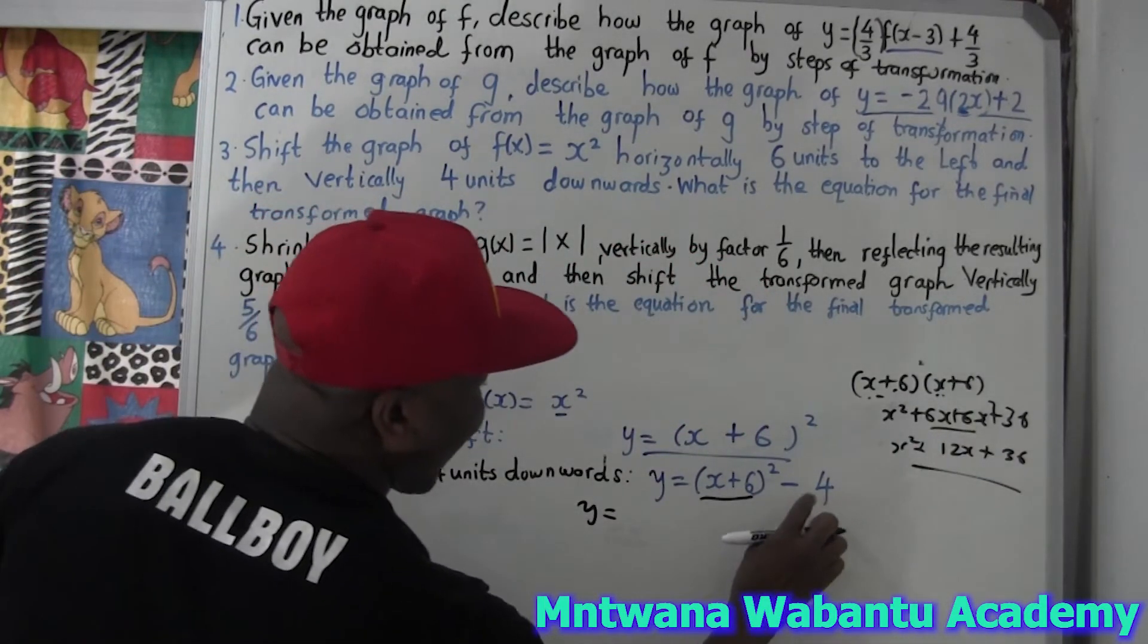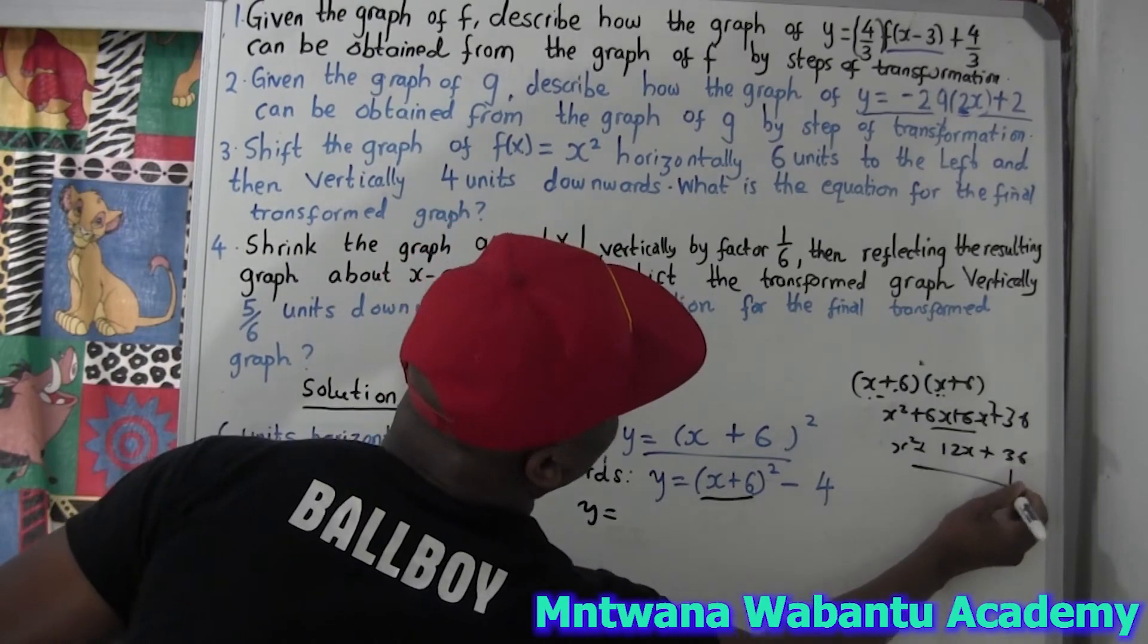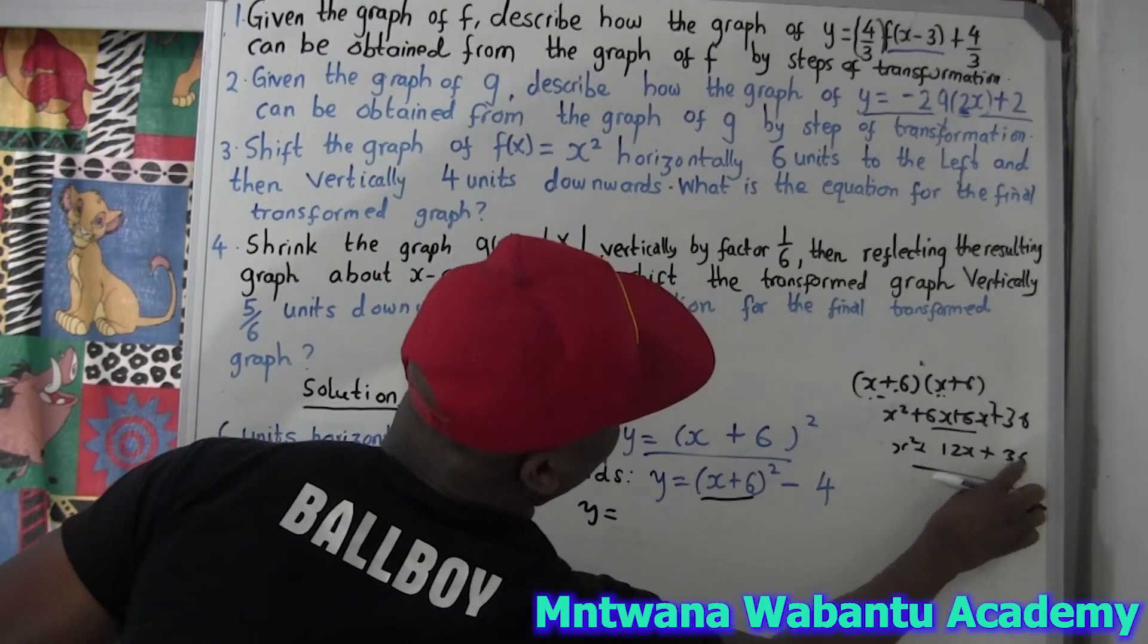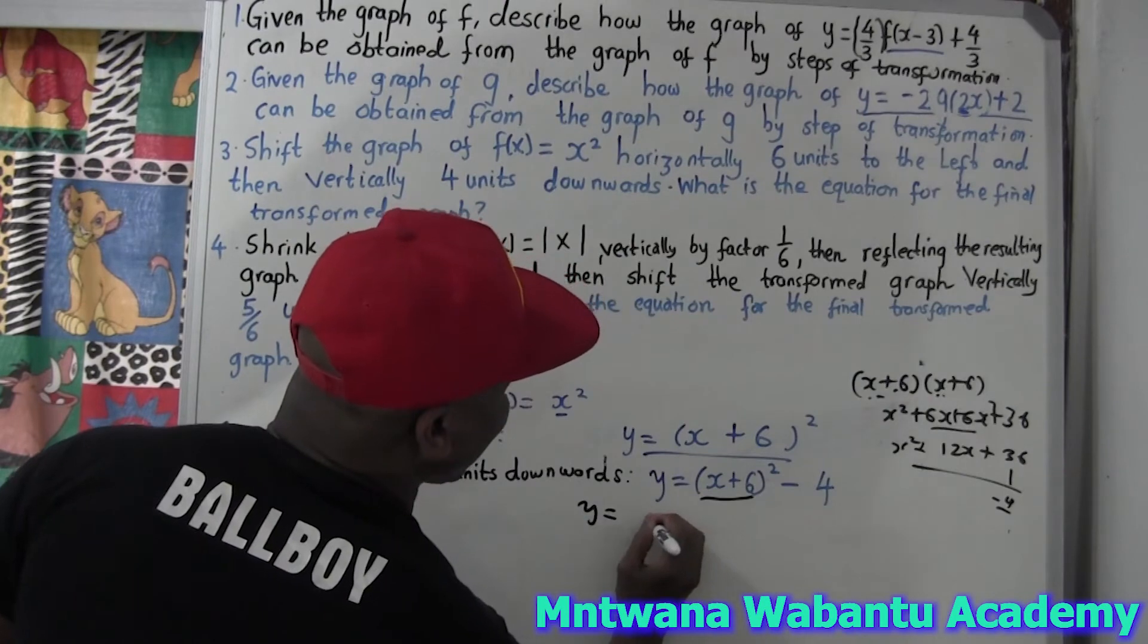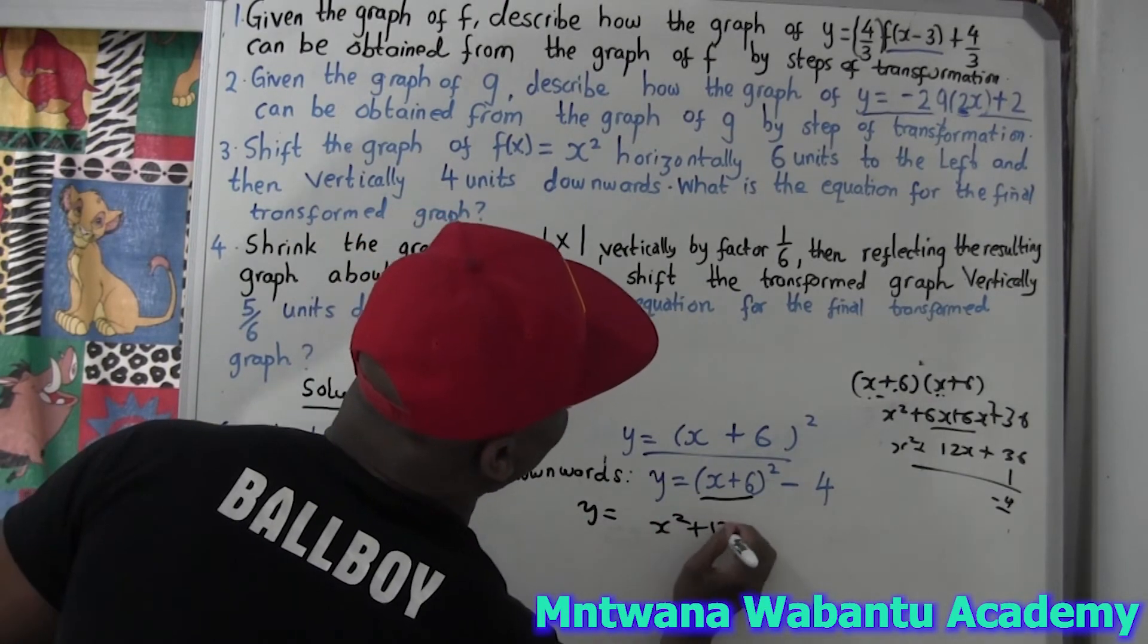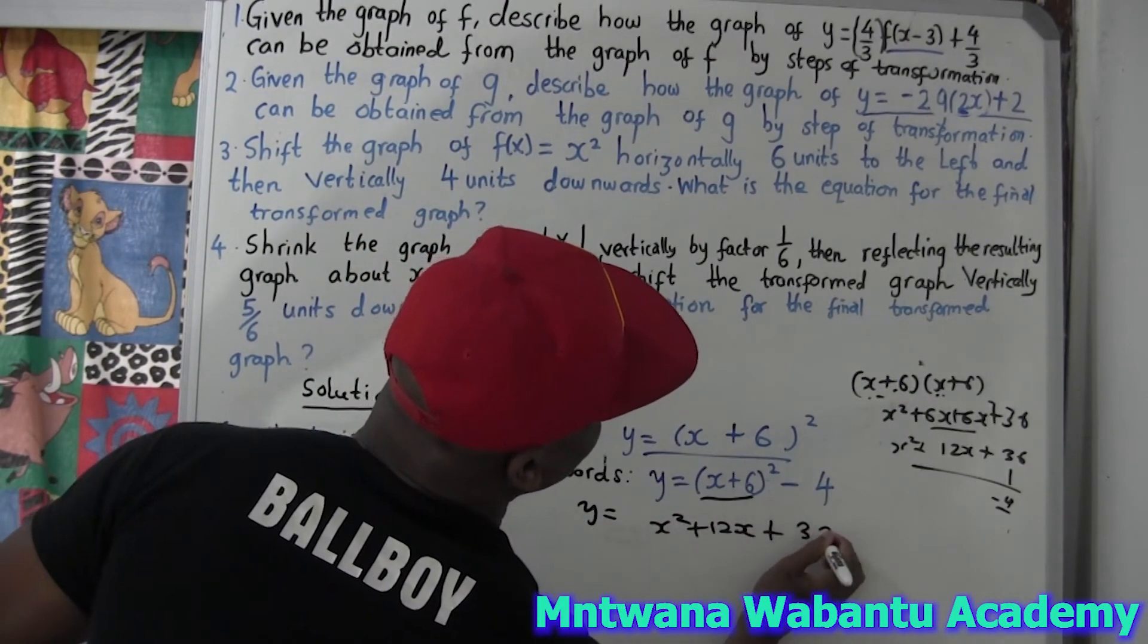So this is going to be, but we have to minus four. The minus four is because you have to minus four. It's going to be thirty two, thirty six minus four equal to thirty six minus three two equal to thirty two. So this is going to be x square plus twelve x plus thirty two.